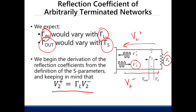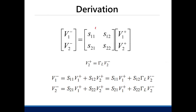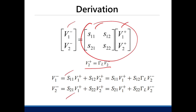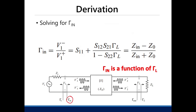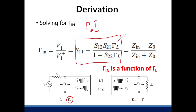So V2_plus equals gamma_L times V2_minus. Simplifying the S-parameter matrix multiplication, we get two equations. Substituting and solving for the reflection coefficient seen at the source — which is V1_minus over V1_plus — you get gamma_in, the reflection coefficient seen at the input side of the transistor. As you can see, it's dependent on gamma_L: gamma_in is a function of gamma_L.